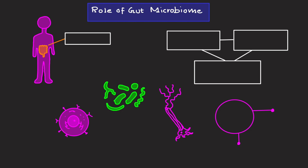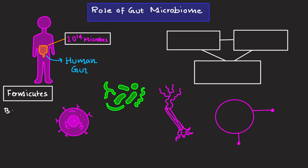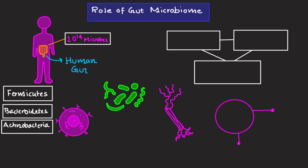Composition and the role of the gut microbiome. The human gut harbors tens of trillions of microorganisms, predominantly Firmicutes and Bacteroidetes, as well as Actinobacteria. These microbes produce short-chain fatty acids, vitamins, and secondary bile acids.